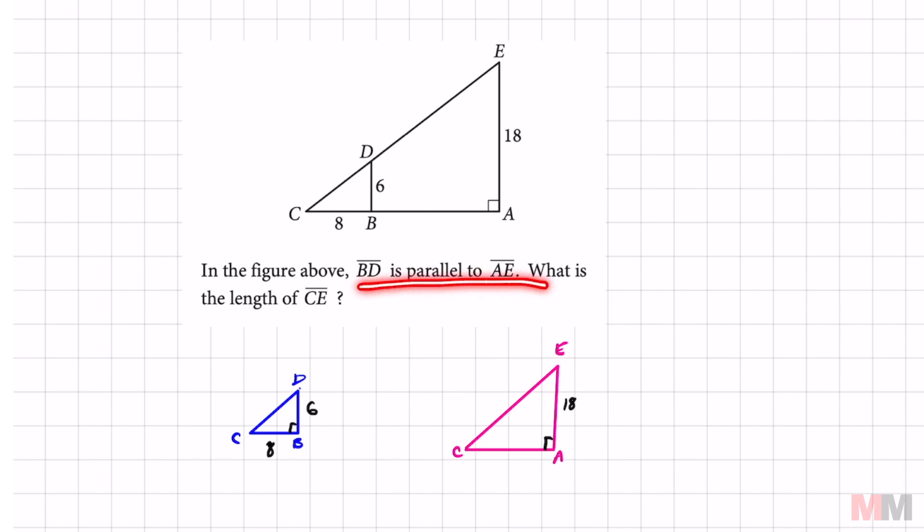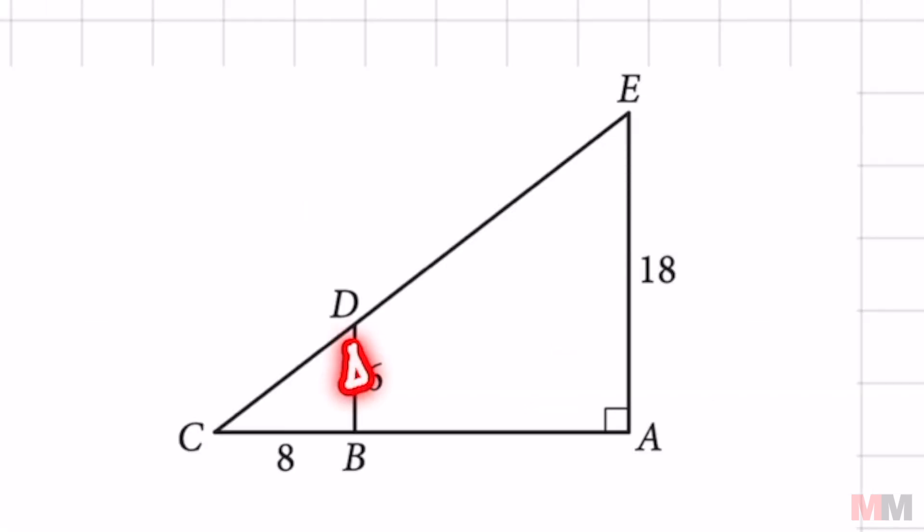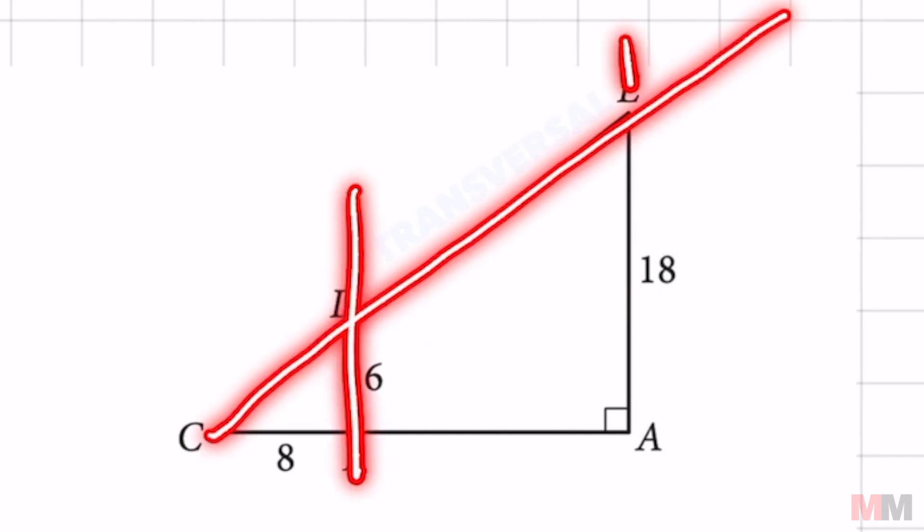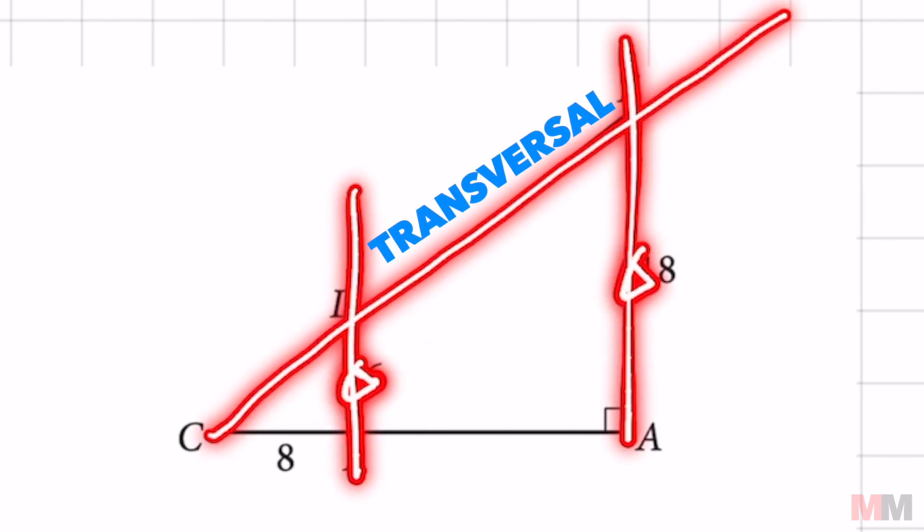First place we want to start is this information right here. If these two are parallel and we got a line segment going through these two parallel lines, then you got yourself a transversal.